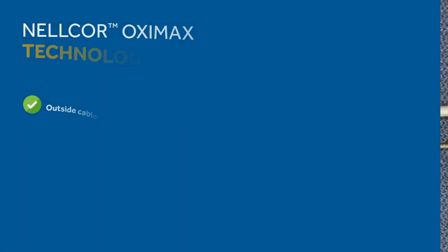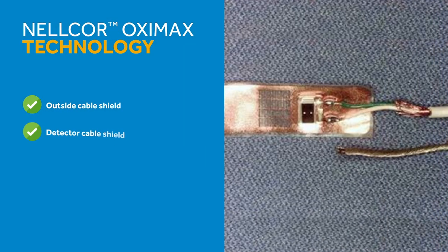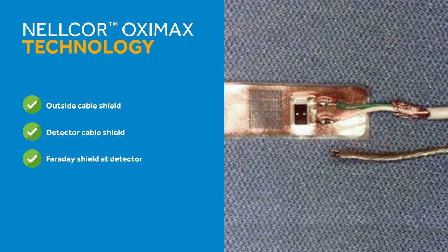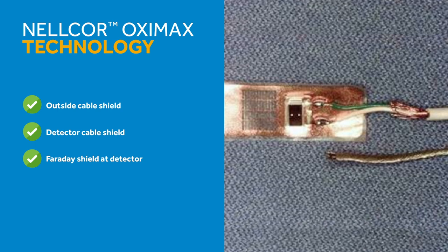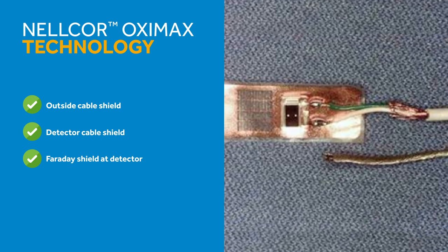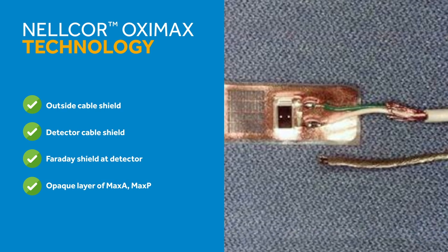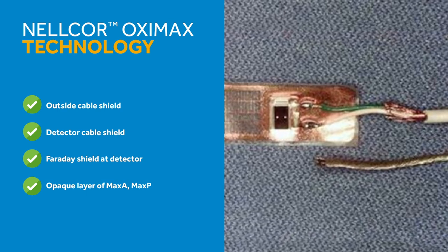The outside cable shield, the detector cable, and the Faraday shield at the detector shield and protect from electromagnetic waves which can interfere with accurate readings. The opaque layer of Max-A and Max-P protect from ambient light, which also ensures accurate SpO2 measurements.